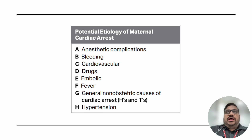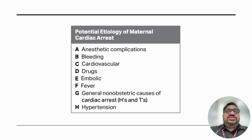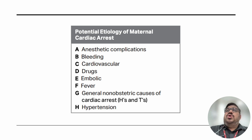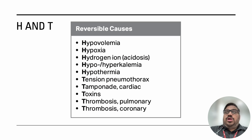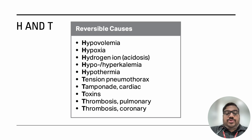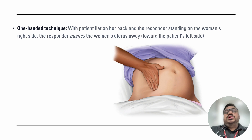A useful mnemonic for potential maternal cardiac arrest etiology: A for anesthetic complication, B for bleeding, C for cardiovascular issues, D for drugs, E for embolism, F for fever, G for general non-obstetric causes (the classical Hs and Ts applicable to any patient), and H for hypertension. The classic Hs and Ts remain: hypovolemia, hypoxia, hydrogen ions, hypo/hyperkalemia, hypothermia, tension pneumothorax, cardiac tamponade, toxins, and thrombosis — pulmonary and coronary.